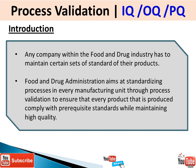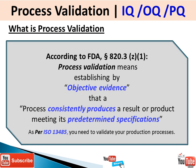Starting with the introduction — any company within the food and drug industry has to maintain certain standards for their products. The FDA aims to standardize the process in every manufacturing unit through process validation to ensure that every product produced complies with the prerequisite standards for maintaining high quality. Going by the FDA definition, process validation is the objective evidence that a process consistently produces a result or product that meets its predetermined specification.